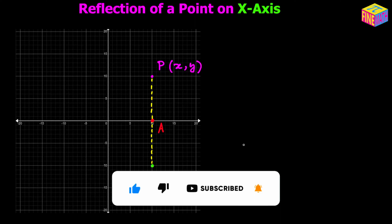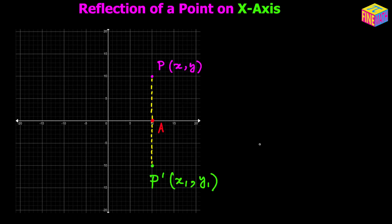From the concept of reflection of light, the distance of the object from the mirror equals the distance of the image from the mirror — so AP equals AP prime. Looking at the dotted line segment from P to P prime, point A is the midpoint of that segment because AP equals AP prime, meaning A divides the line segment into two equal parts.